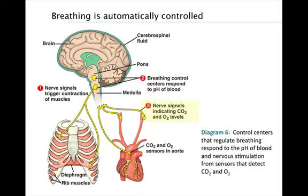Lastly, secondary control over breathing is exerted by sensors in the aorta and carotid arteries that monitor concentrations of oxygen as well as carbon dioxide. When the oxygen level in the blood is severely depressed, these sensors signal the control center via nerves to increase the rate and depth of breathing.